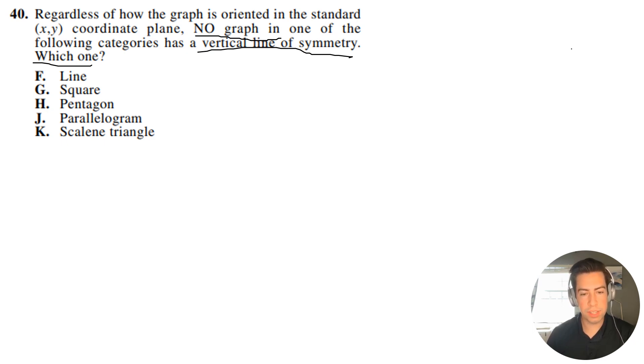So let's think about a line here. If I have a line, there's a vertical line of symmetry, right? If I have a line like this, there's a vertical line of symmetry. So this one does have a vertical line of symmetry, and we want one that has no line of vertical symmetry. So that works for a line. Line is out.